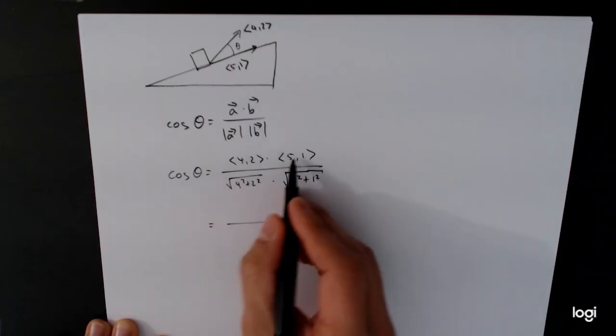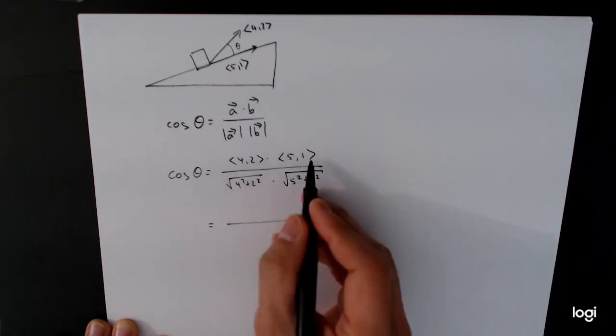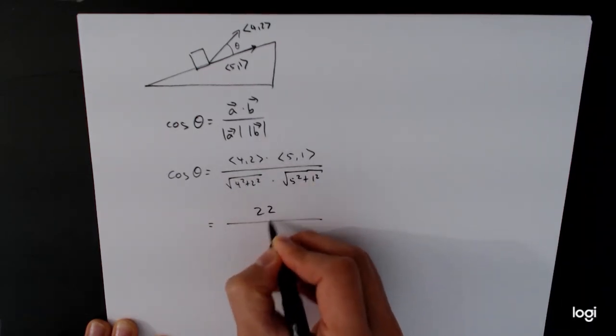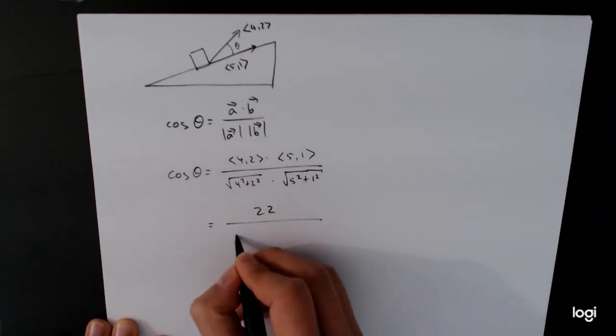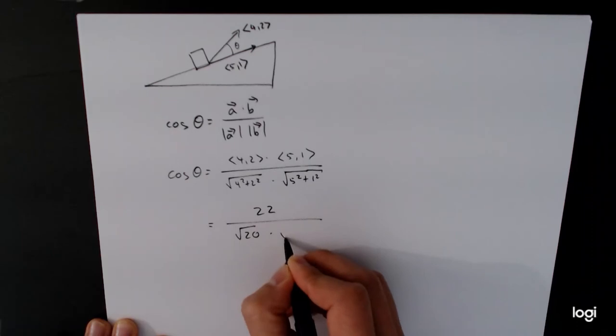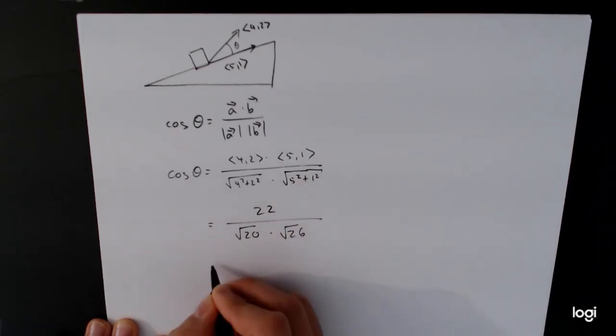Dot product. 4 times 5 is 20. 2 times 1 is 2. We're adding those together. So 22 over, this is square root of 16 plus 4 is 20. So square root of 20 times 25 plus 1 is 26.